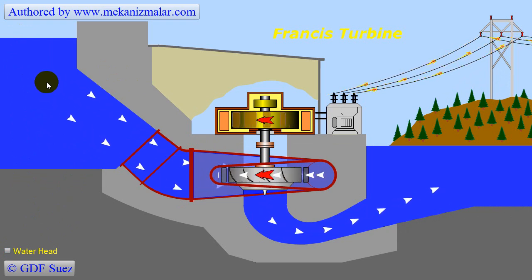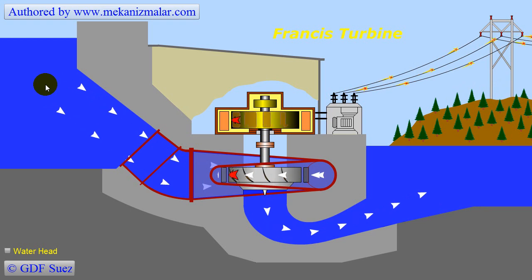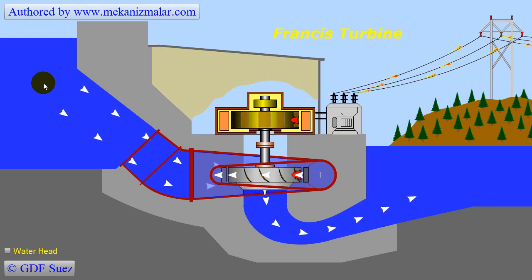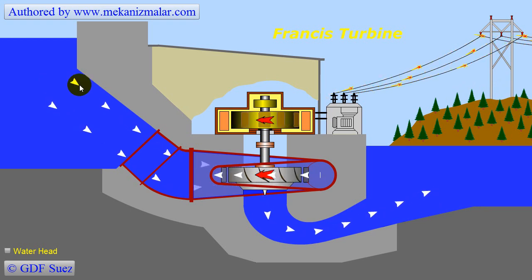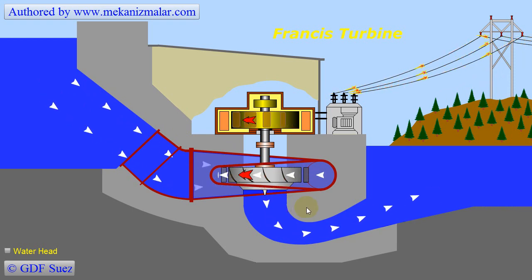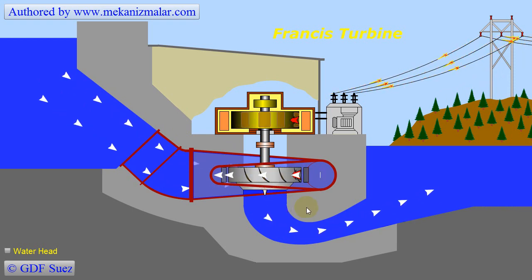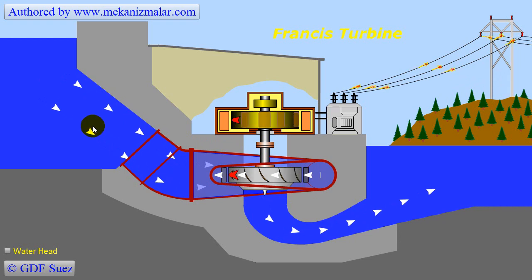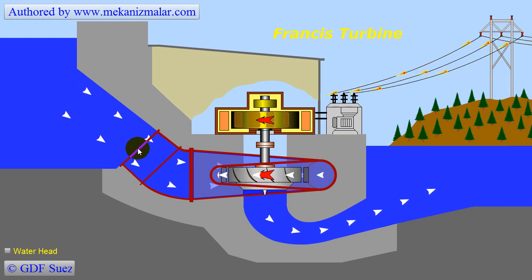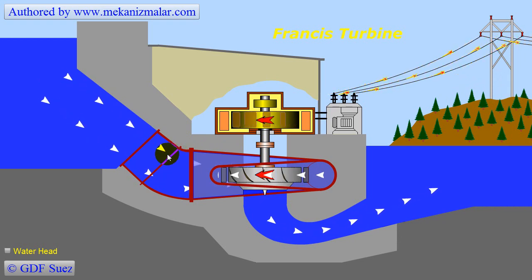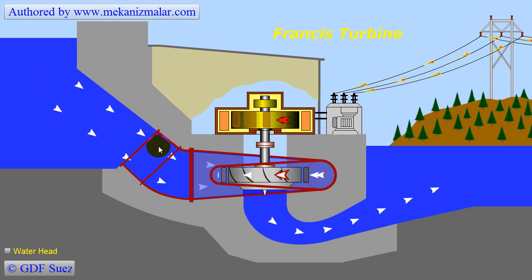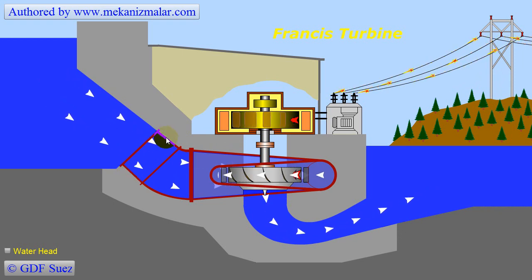This animation shows the operation of a Francis turbine in a dam. The arrows show the water path and direction inside the dam. The water from the reservoir behind the dam is transferred to the turbine by a penstock, whose diameter could be as large as 10 meters.